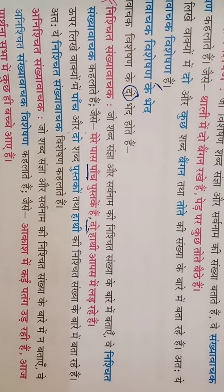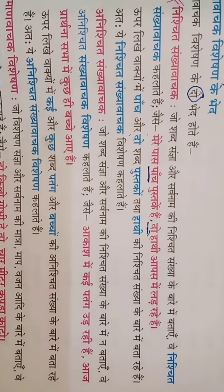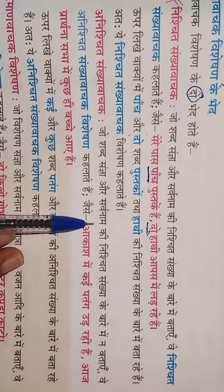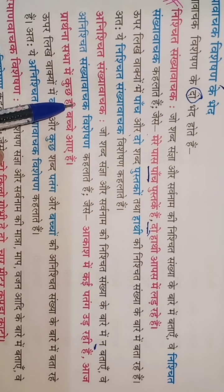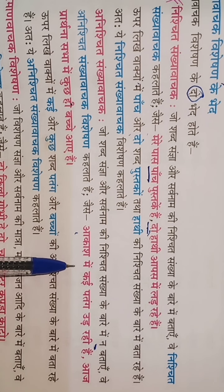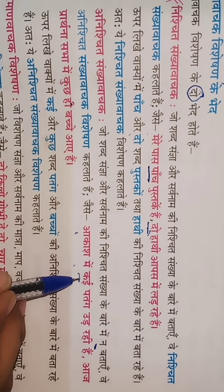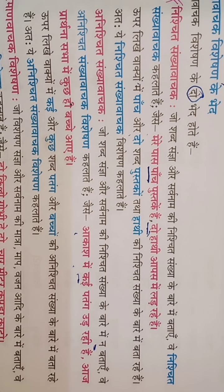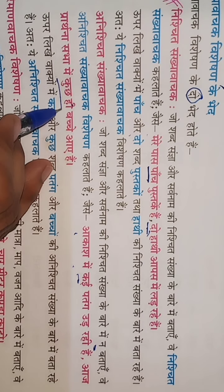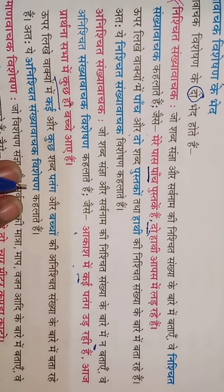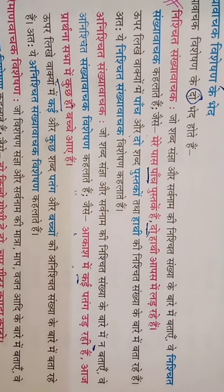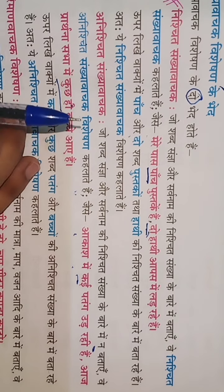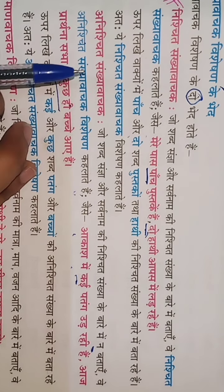Second: Anishchit Sankhya Vachak Visheshan — jo shabd sangya ki nishchit sankhya ke baare mein nahi batate. For example: 'Aakas mein kai patang ud rahi hai' — kitni patang? Kuch pata nahi. 'Pratna subah mein kuch hi bachche aaye' — koi nishchit sankhya pata nahi. Jahan nishchit sankhya ka bodh na ho, voh Anishchit Sankhya Vachak Visheshan hai.